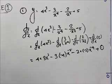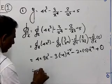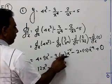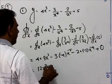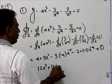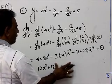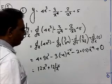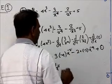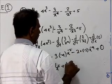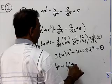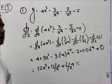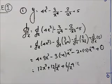So we get: 4 × 3 = 12x² minus 3 × (−4) = +12x⁻⁵, which is 12/x⁵, minus 2 × (−3) = +6/x⁴, plus 0, since the differentiation of any constant is zero. This is the final derivative.